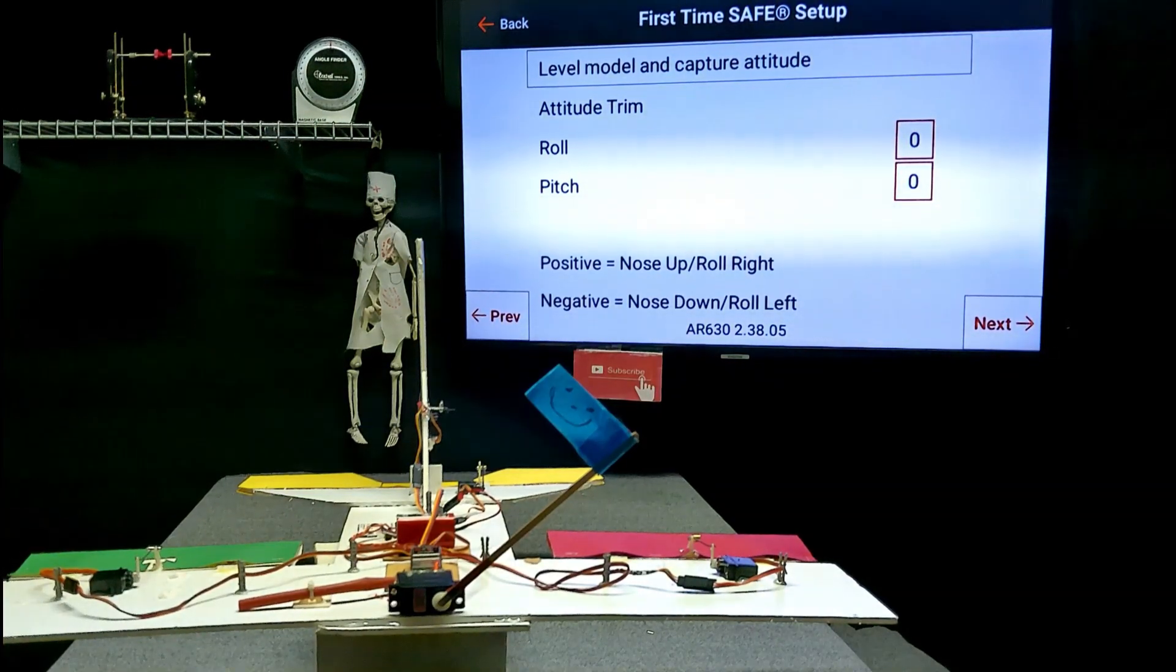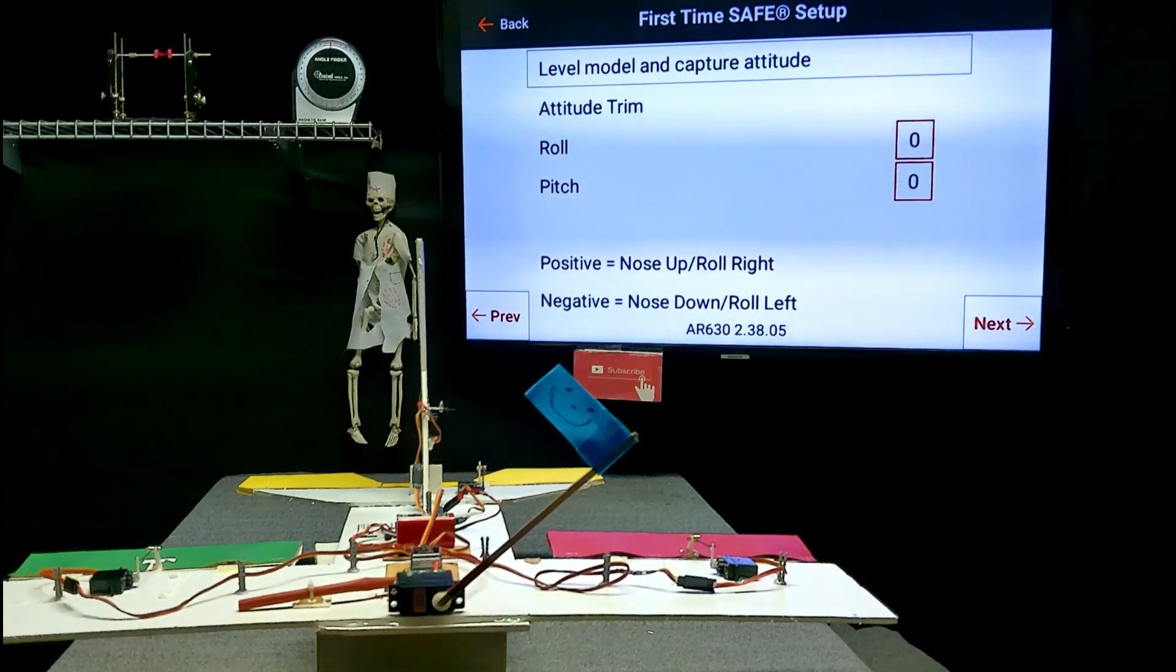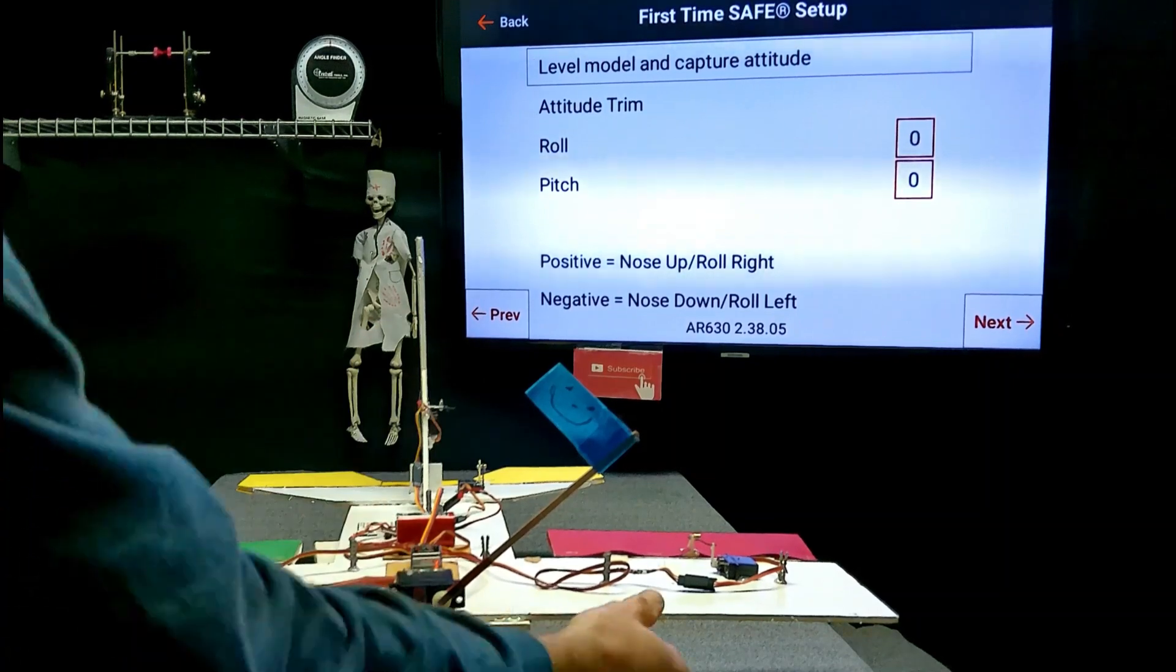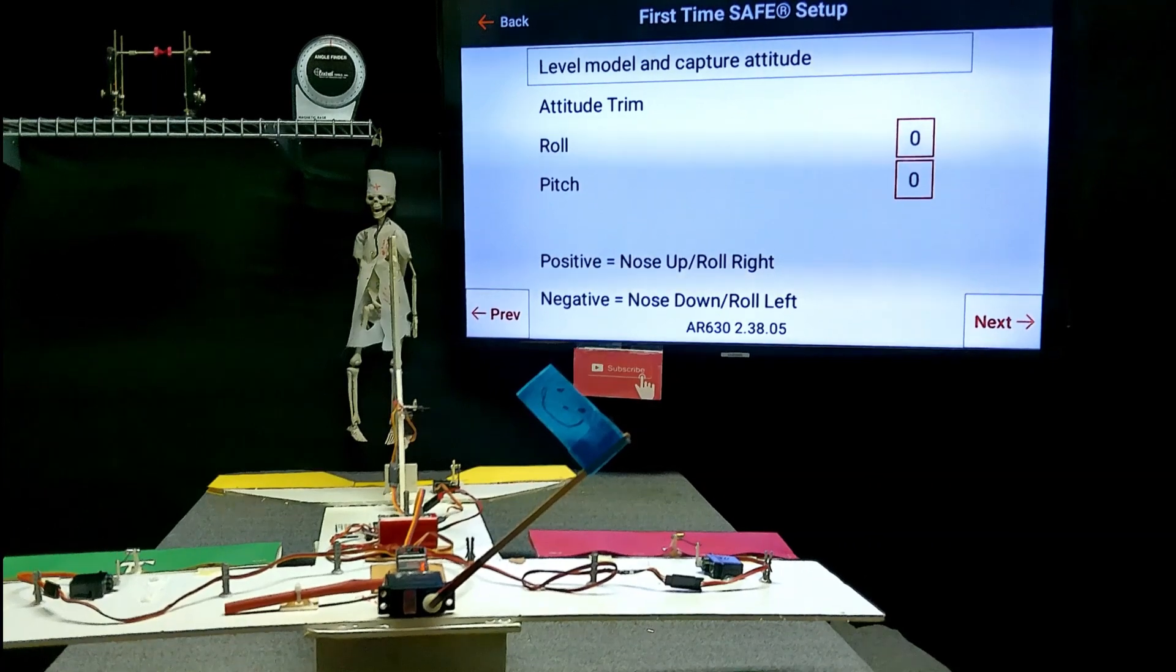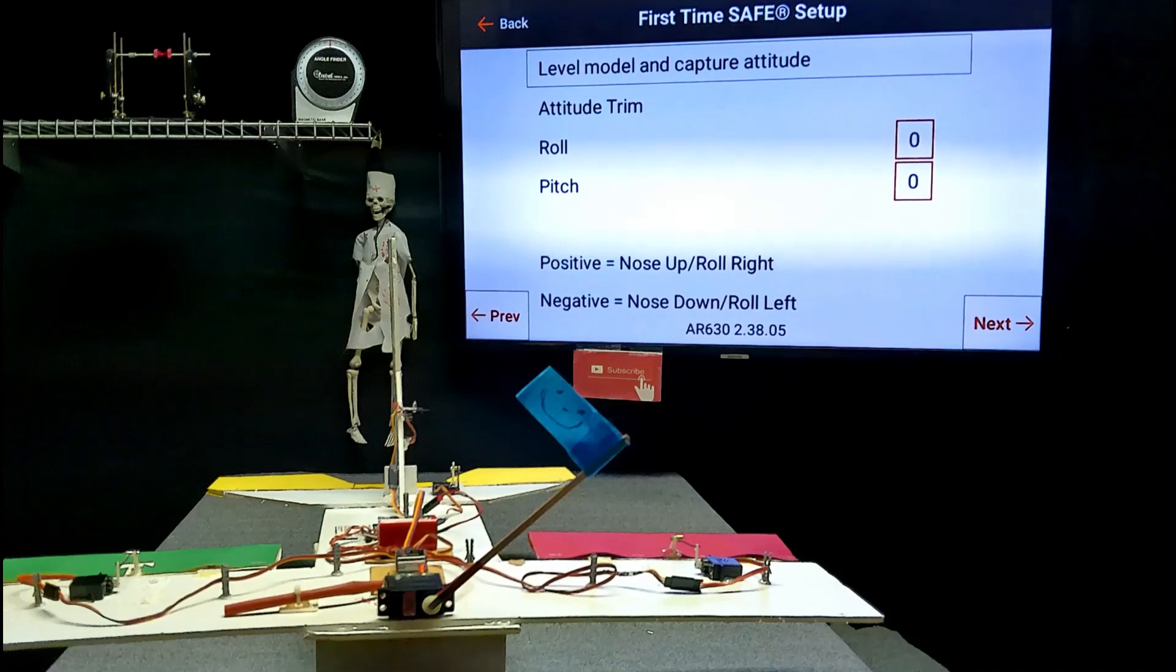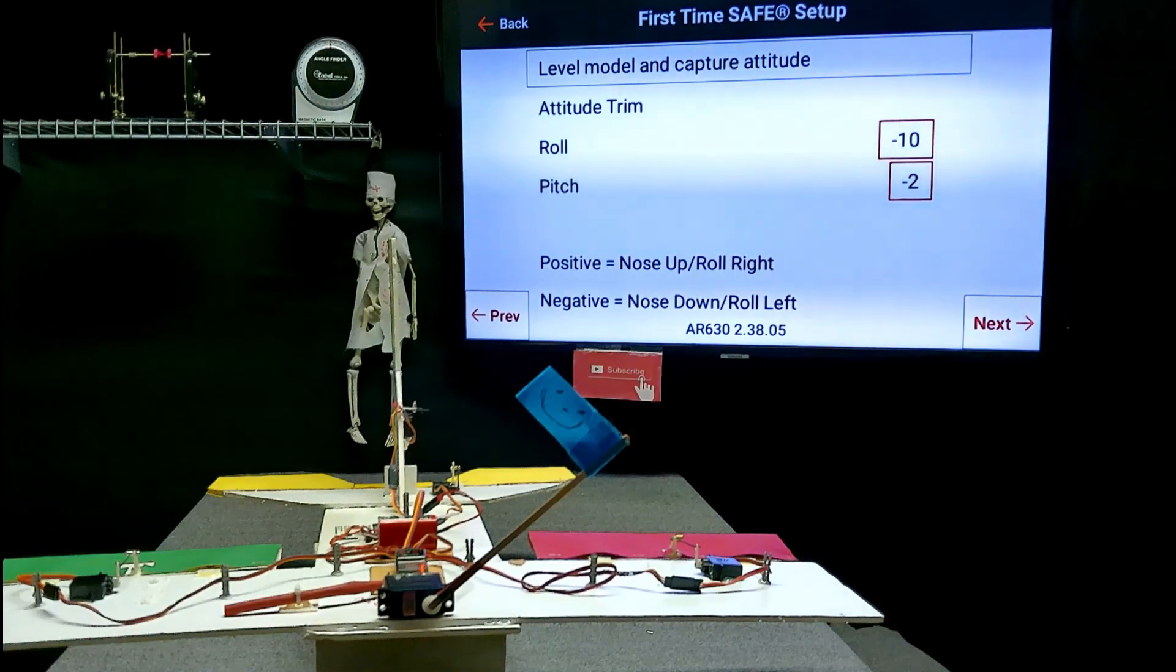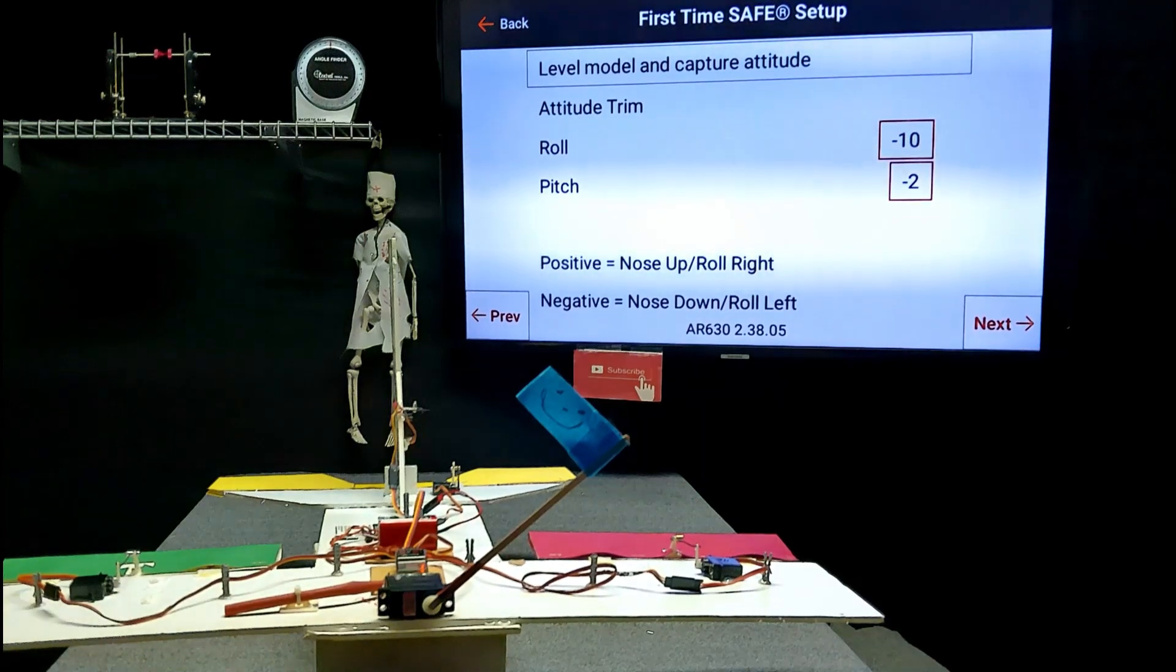Back to our test plane. And we have it sitting level. Now, we're going to press where it says level model and capture the attitude. You've got your plane level, front to back, side to side, it's level, level flight. And now, we're going to press level model and capture the attitude. Now, it has decided that level flight is negative 10 in the roll and negative 2 in the pitch.